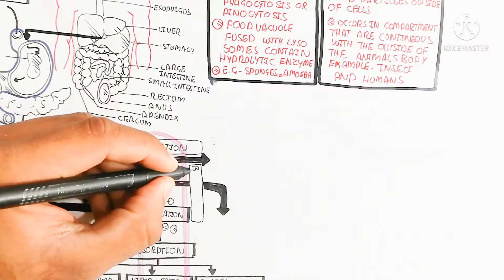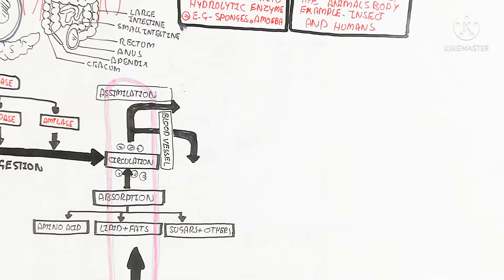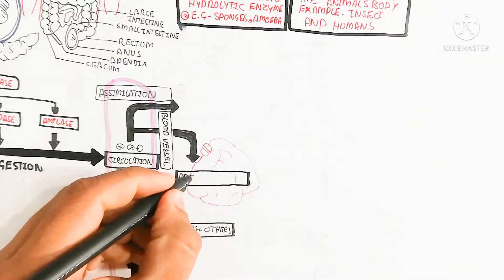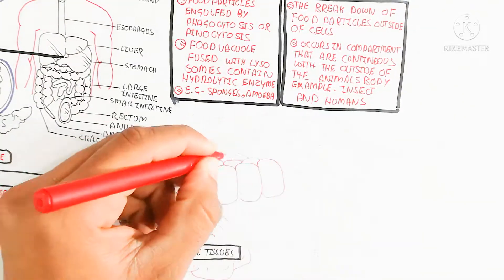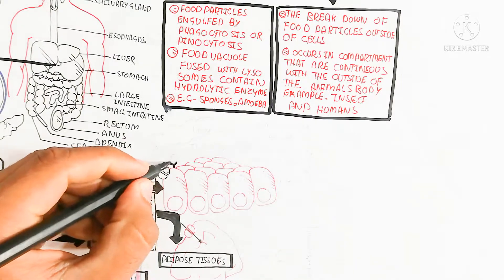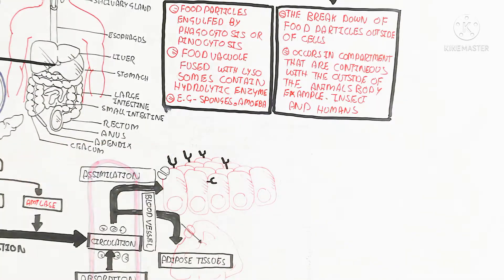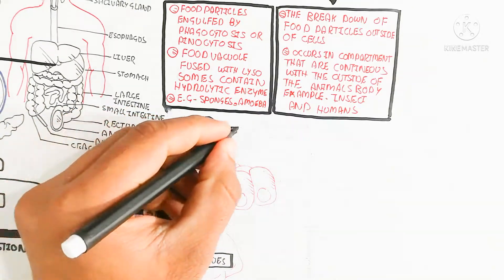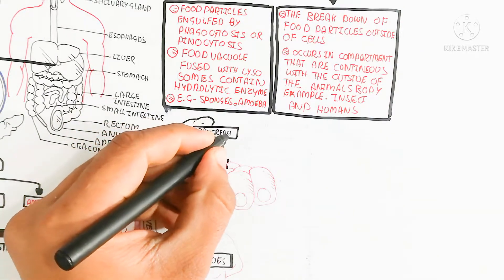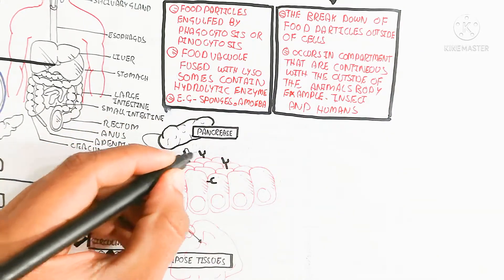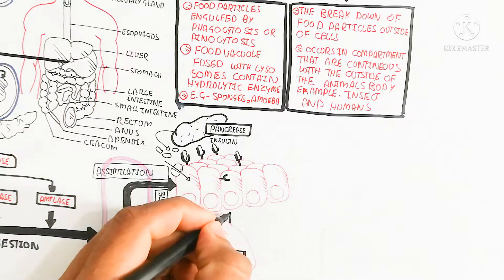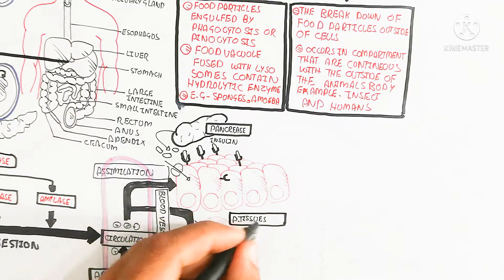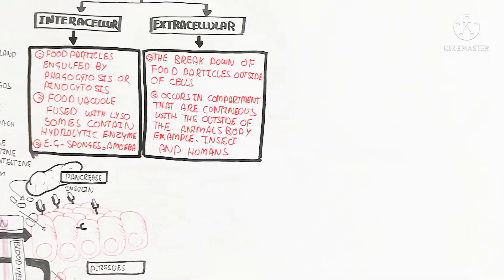Assimilation then occurs — nutrients become part of the body. For example, sugars and fats enter adipose tissue and adipocytes, while sugars move into peripheral tissues such as muscle. Due to hyperglycemia, the pancreas produces insulin, which binds to insulin receptors to open glucose transporter channels for glucose entry. This leads to glycolysis, lipogenesis, and various other anabolic processes.